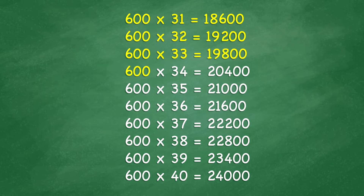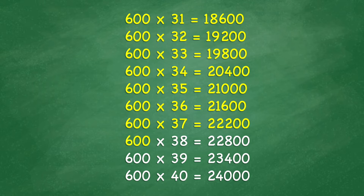600 x 34 equals 20,400. 600 x 35 equals 21,000. 600 x 37 equals 22,200. 600 x 38 equals 22,800. 600 x 39 equals 23,400.